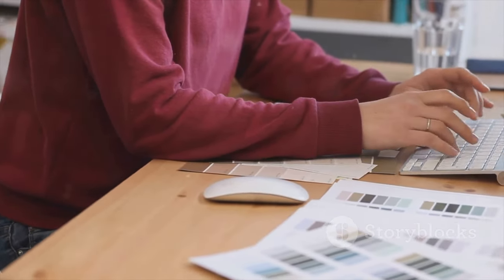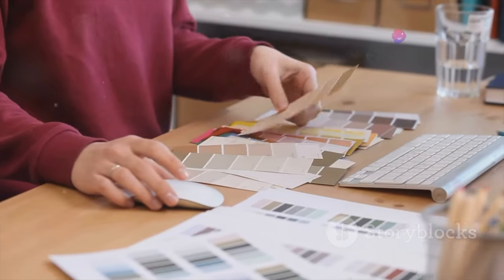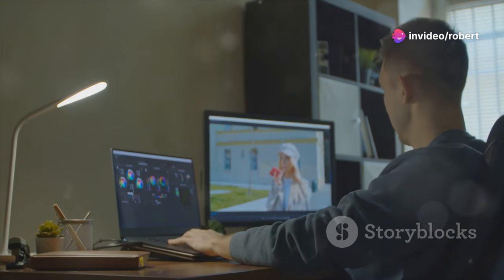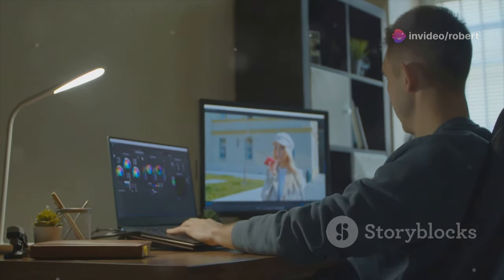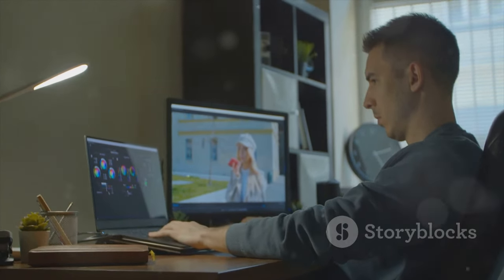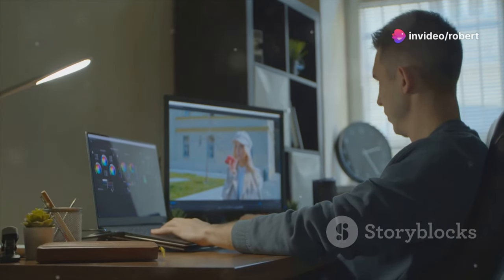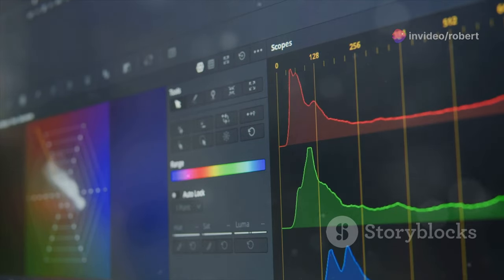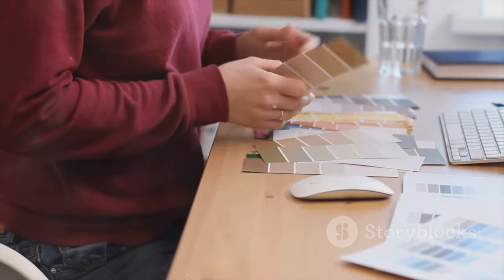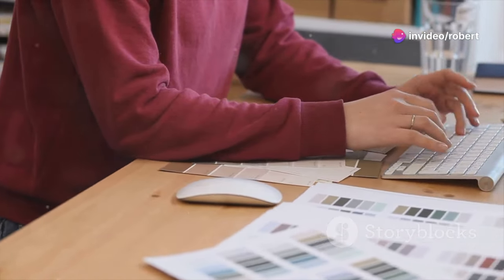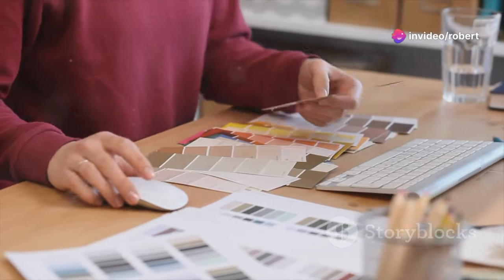Whether it's RGB for digital screens or CMYK for print, each model has its own unique characteristics and applications. In the digital realm, colour is more than just an aesthetic choice, it's a science. This science involves understanding the technical aspects of colour, such as how colours are generated by light and how they can be reproduced accurately across different devices. It's about understanding how colours are created, how they interact with each other and how they will ultimately be perceived by the human eye, whether on screen or in print. This knowledge allows you to make informed decisions, ensuring that your designs look their best in any medium.